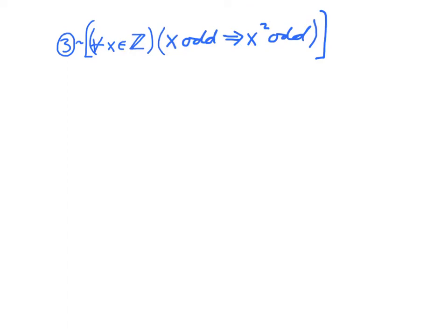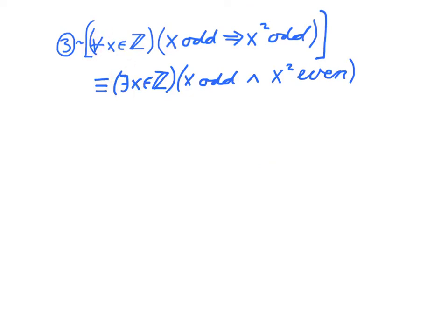So the answer is as follows. You change the quantifier, and this is the negation of the open sentence using P and not Q. In words, the useful denial of 'for every integer x, if x is odd then x squared is odd' is: there exists an integer x such that x is odd and x squared is even. We're using the fact that every integer is either even or odd. Note that when we take a useful denial, it is no longer a conditional.